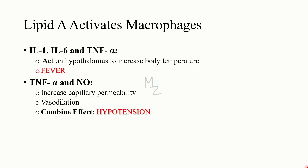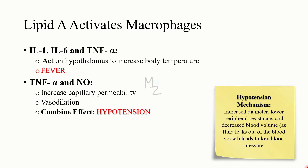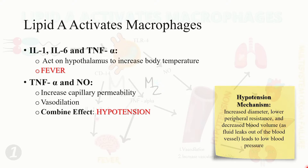TNF-α along with nitric oxide increases capillary permeability and causes vasodilation. The combined effect leads to hypotension. Vasodilation means increasing the diameter of the vessel, and when the diameter is increased along with increased capillary permeability, fluid leaks out. This leads to decreased blood volume and lowered peripheral resistance, resulting in low blood pressure — hypotension.